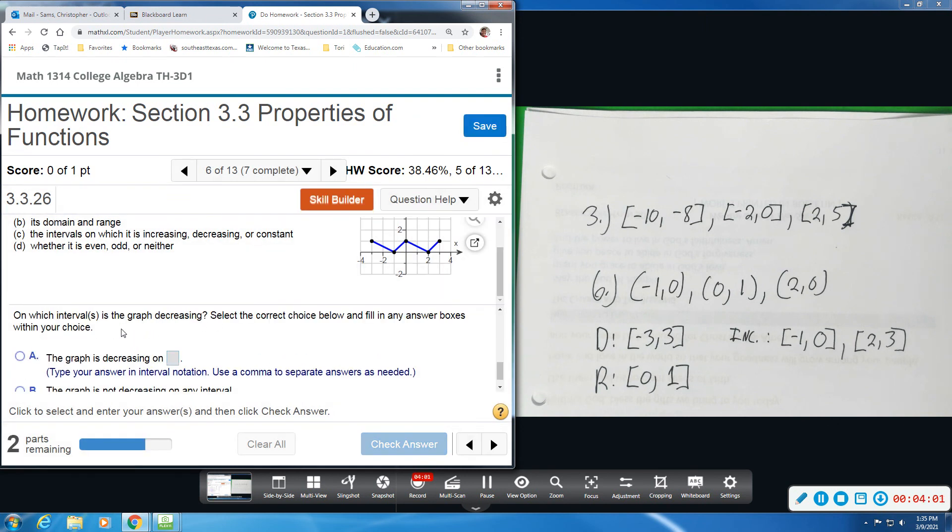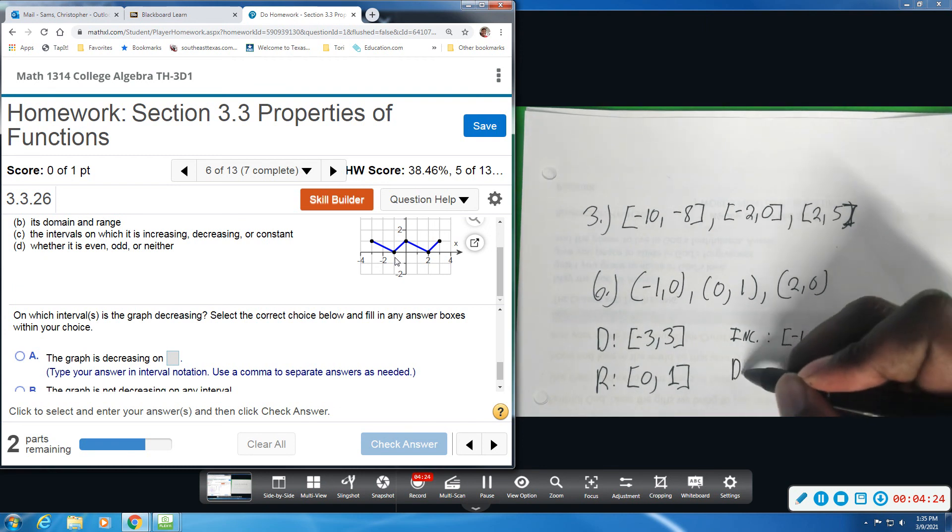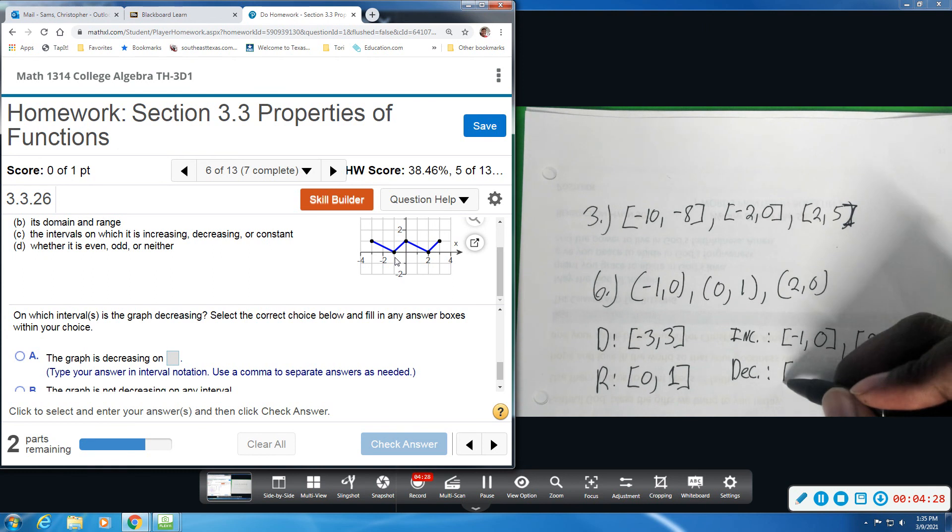All right, now next we want to know intervals where the function is decreasing. So going in the downward direction from left to right. So starting at an x-value of negative three, this graph is decreasing until we get to an x-value of negative one. So from negative three to negative one, we are decreasing. So just abbreviate DEC, and we are decreasing from negative three to negative one.